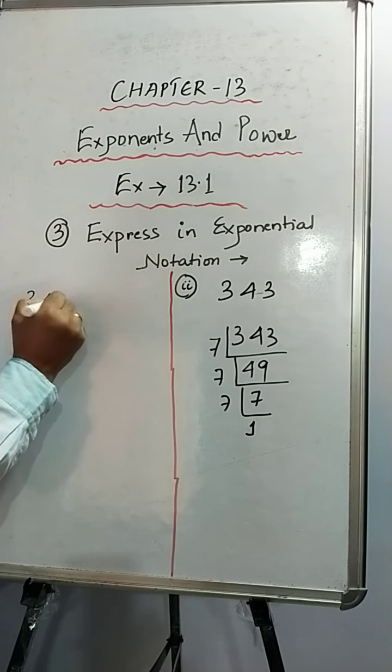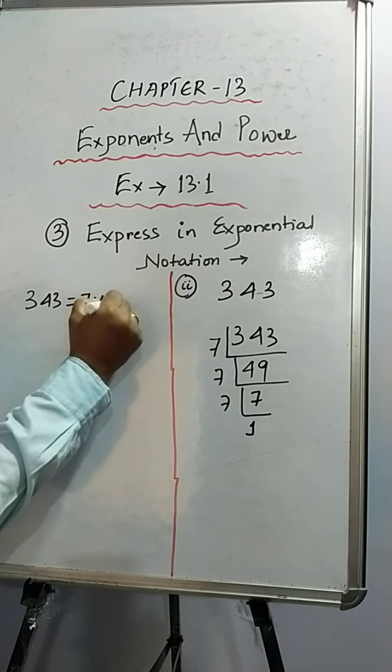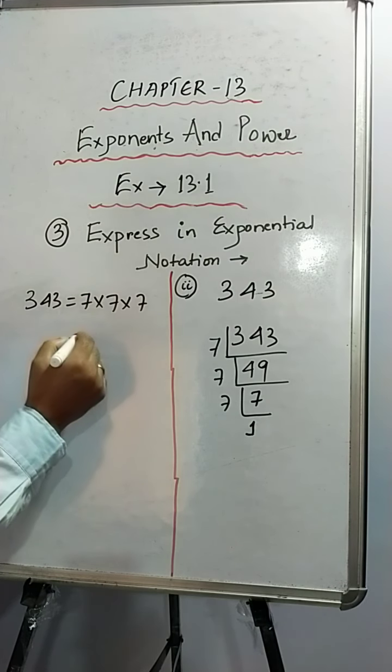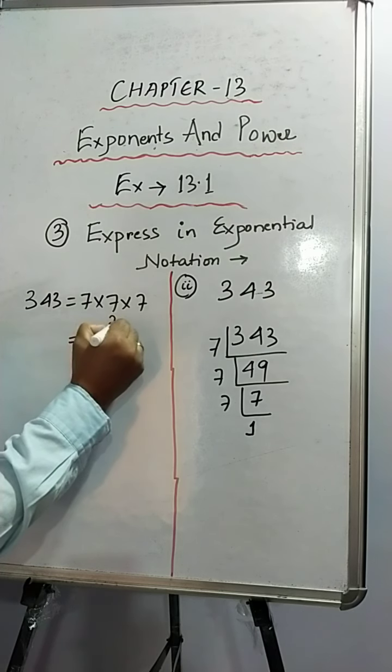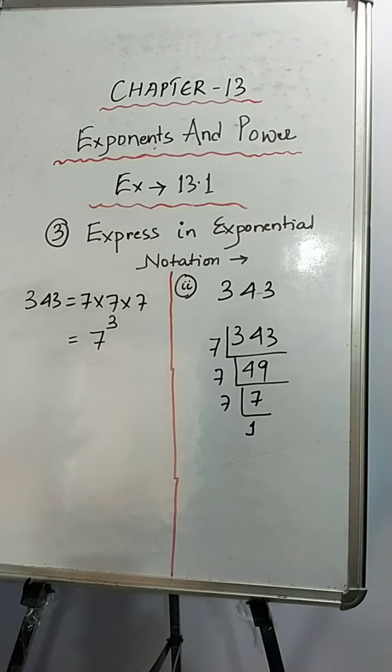The next step: 343 is equals to 7 into 7 into 7. So how to write it in the exponential form? 7 to the power 3 or 7 cube, whichever way you can say.